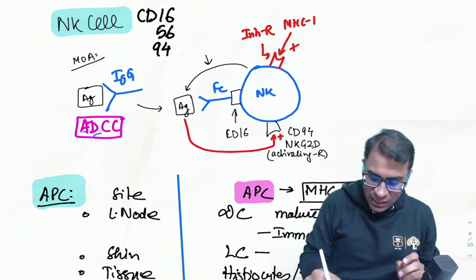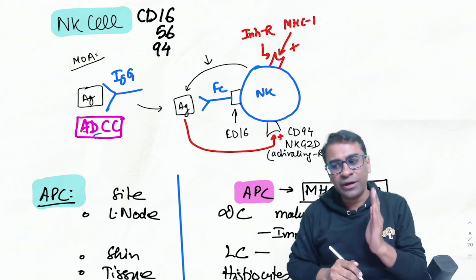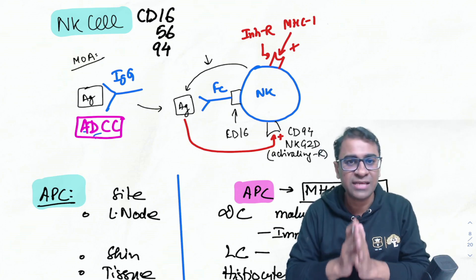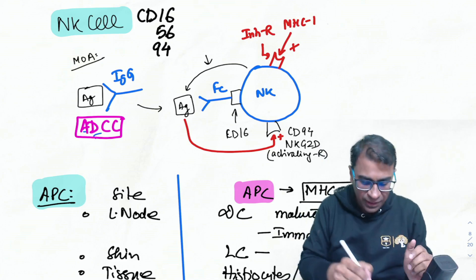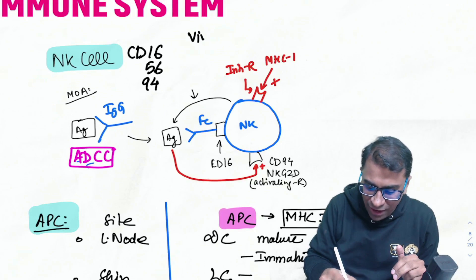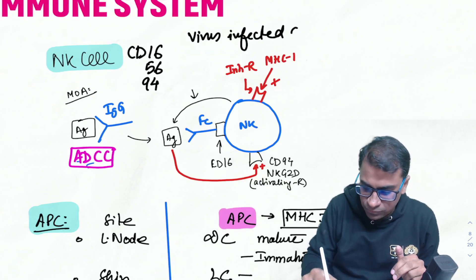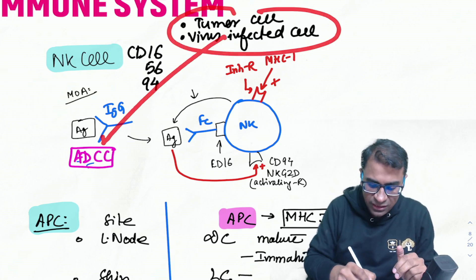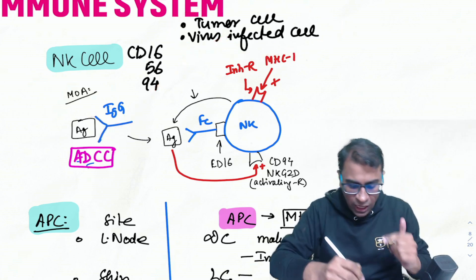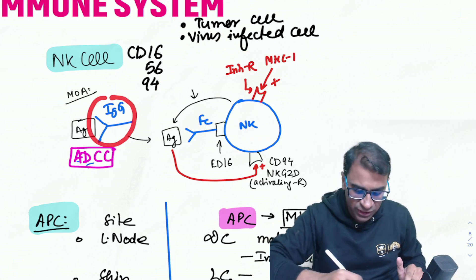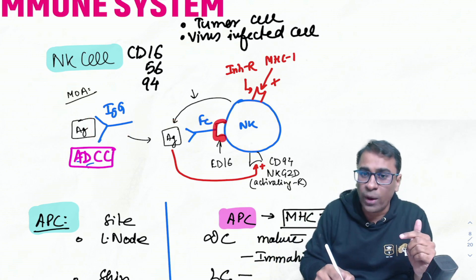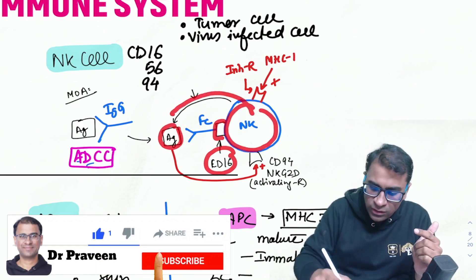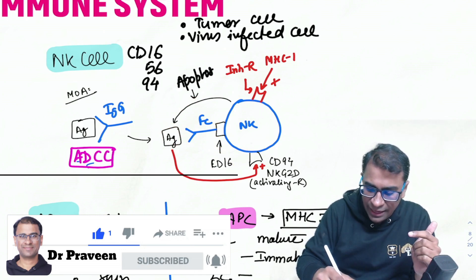NK cells act via ADCC — antibody-dependent cell-mediated cytotoxicity. The antigen, which can be a virus-infected cell or tumor cell, is first opsonized by IgG antibody. After opsonization, it binds to NK cells via CD16, which is the Fc receptor of IgG. The NK cell then induces apoptosis in the target.